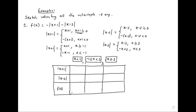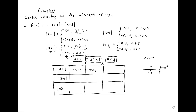When x is less than negative 1, the modulus of x plus 1 equals negative x minus 1. When x is between negative 1 and 3, the modulus of x plus 1 equals x plus 1. When x is greater or equal to 3, the function is still defined as x plus 1, since any value greater or equal to 3 is certainly greater than negative 1.